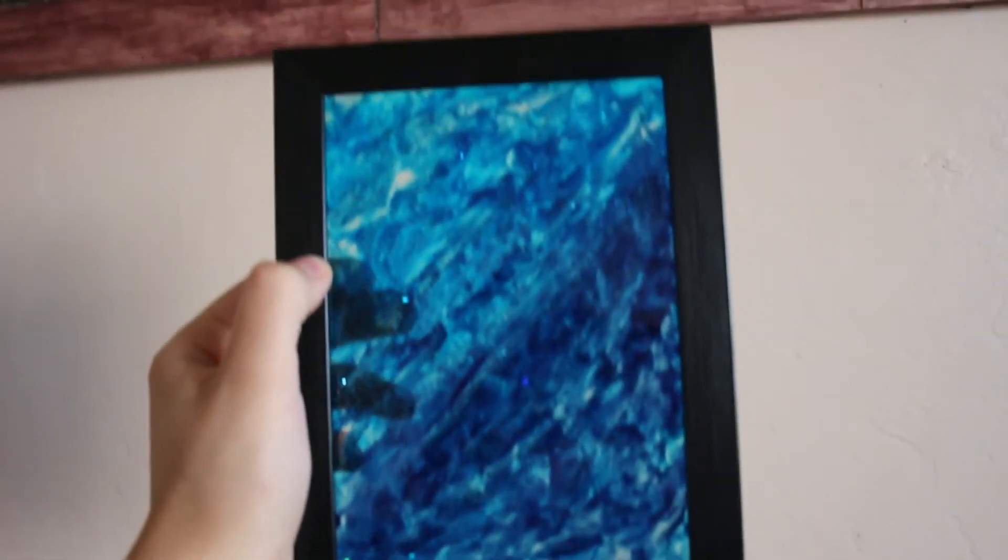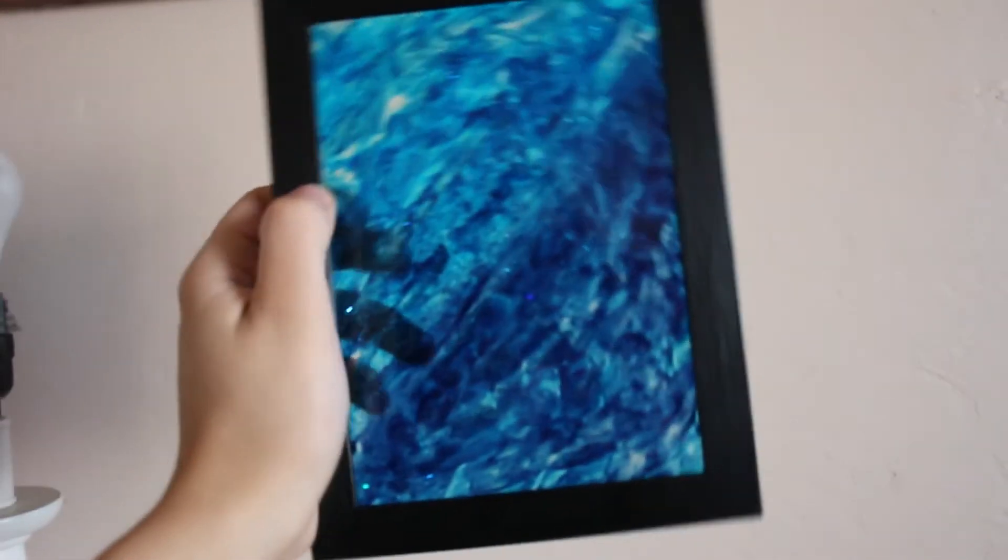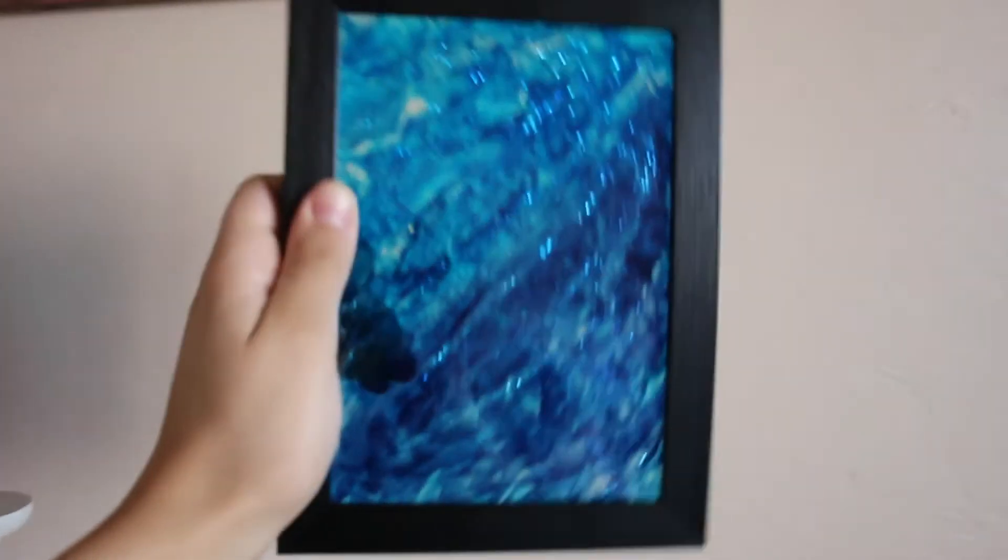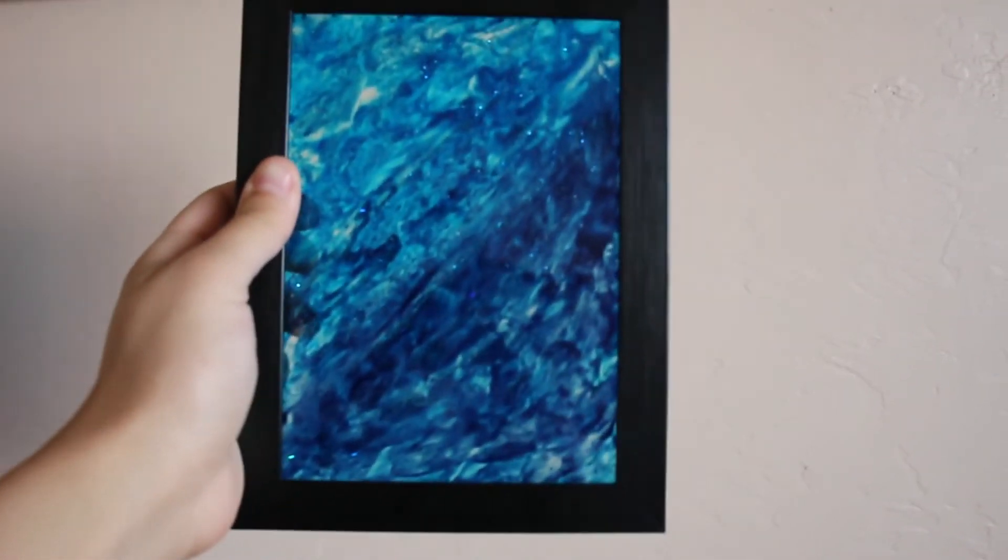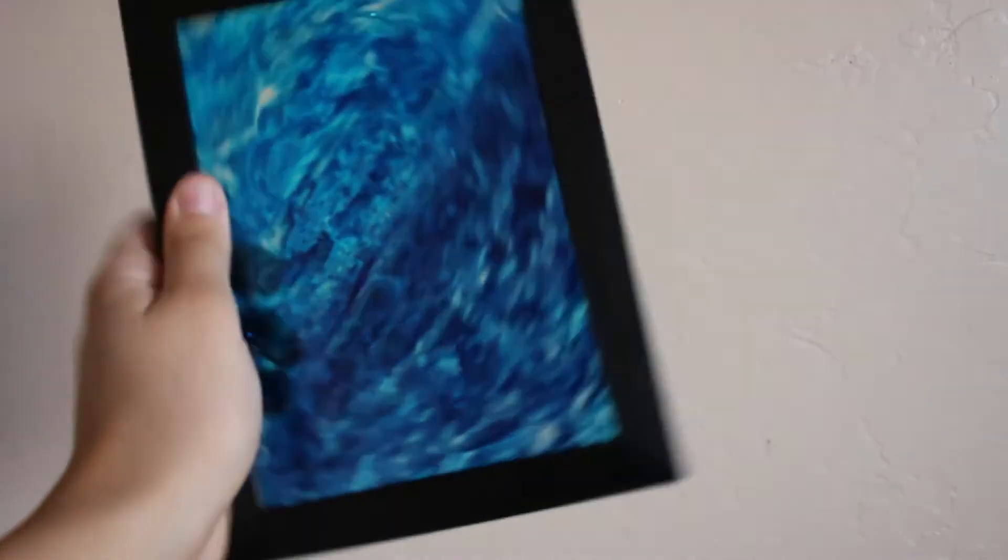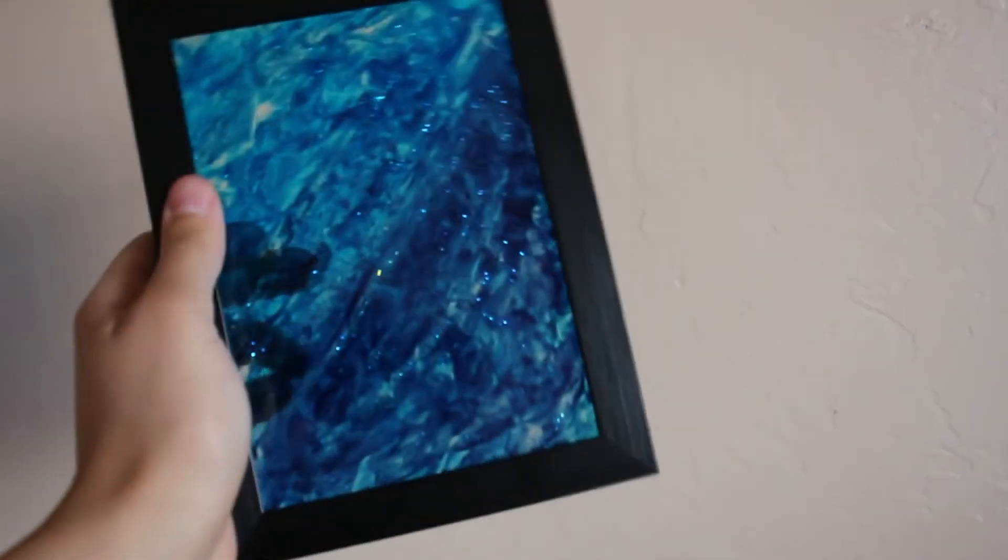So I'm actually going to be leaving it just like this without the back, because I think this stained glass look looks really nice with the sun coming through it. So what I'm going to do is I'm just going to glue the glass to the frame, and then it can just be hung just like that.